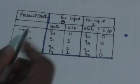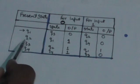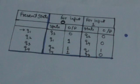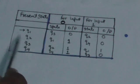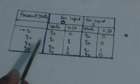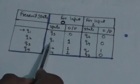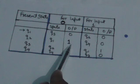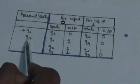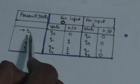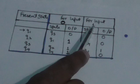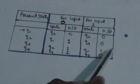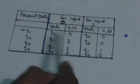Now look at this rule. Here the present state is Q2. When the input symbol is 0 — meaning when the machine is in state Q2 and it reads 0 — the next state will be Q1 and the output will be 1. When the present state is Q2 and it reads input symbol 1, it will transit to Q4 and give output 0. In this way we can interpret this table.